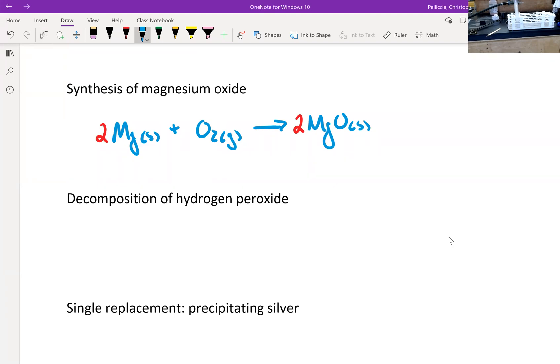This reaction can be represented by hydrogen peroxide, which is a liquid decomposing into liquid water and into oxygen gas. And again, that reaction just needs to be balanced. And a two there, and a two there.